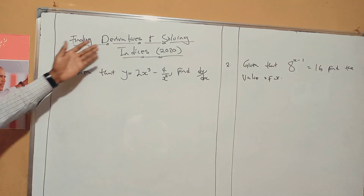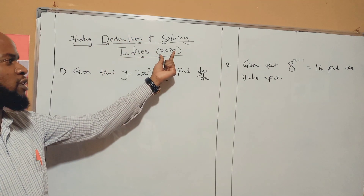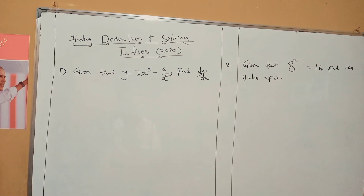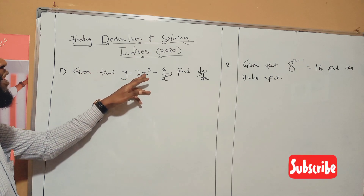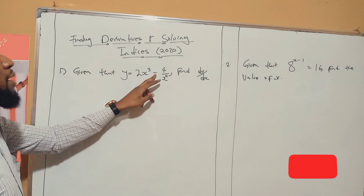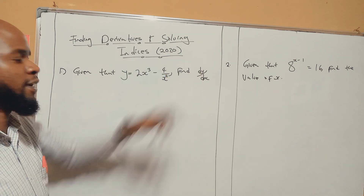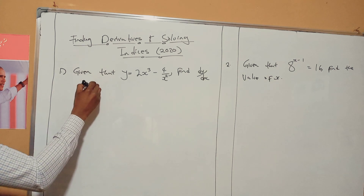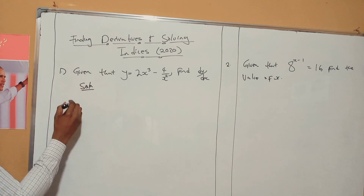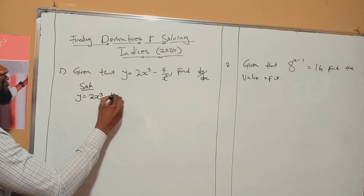We're looking at finding derivatives and solving indices, and the focus is the 2020 September question, Paper 1. The question we were given is: given that y is equal to 2x to the power 3 minus 4 over x squared, find dy/dx. So, solution — dy/dx stands for the derivative. Let me write my original, which is this.